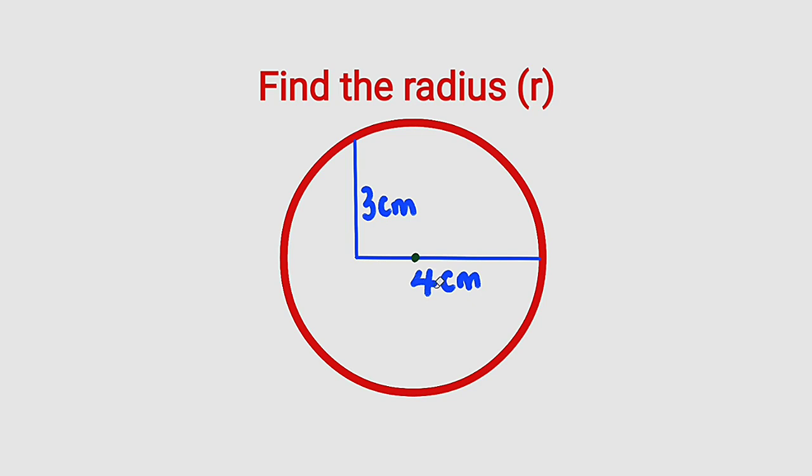We are asked to find the radius of this particular circle. We are given a circle with two line segments - one line segment here which is 3cm, and another line segment here which is 4cm, and we are asked to find the radius.